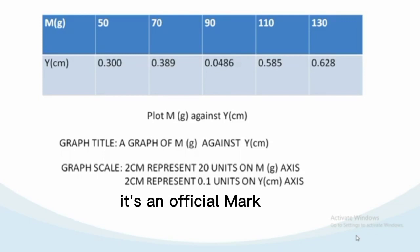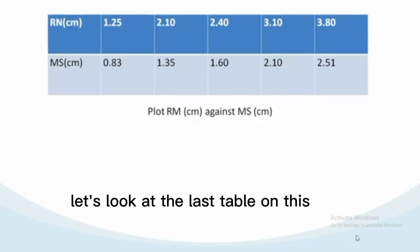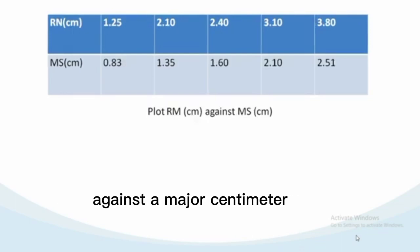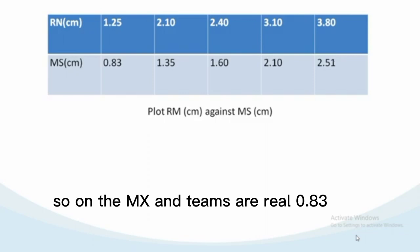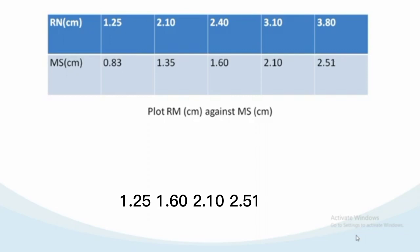Let's look at the last table. We have RN in centimeters against MS in centimeters. The values are 1.25, 2.10, 2.40, 3.10, 3.80. On the MS centimeter axis we have 0.83, 1.35, 1.60, 2.10, 2.51. If the instruction says plot RM in centimeters against MS in centimeters, what's our graph title?